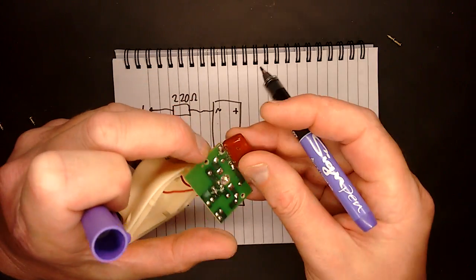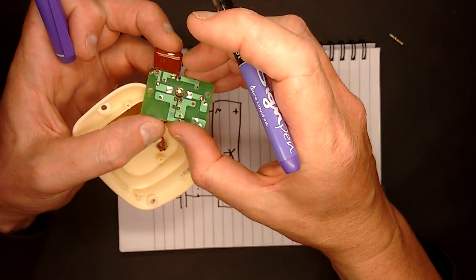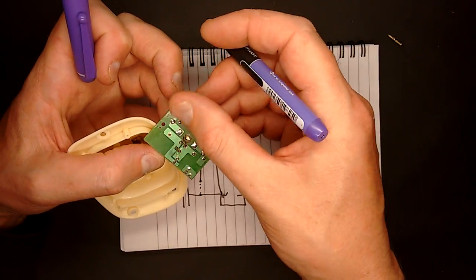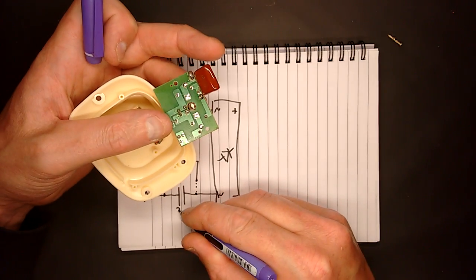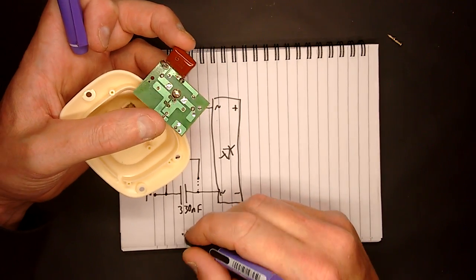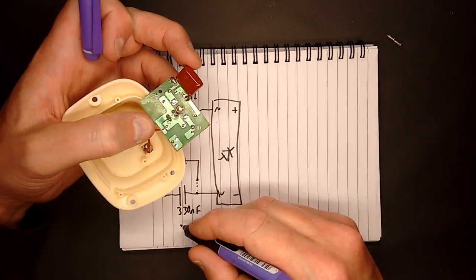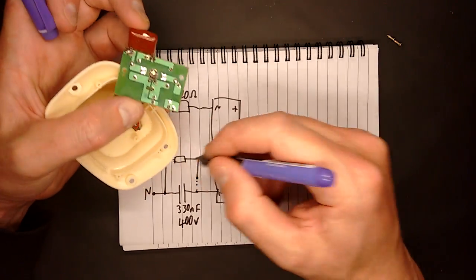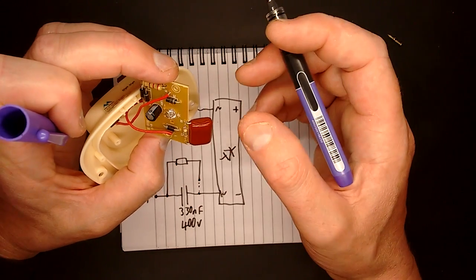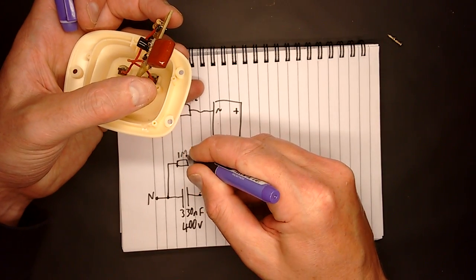So the capacitor is 330 nanofarad, 334. So that's three, three, and four zeros. So that's actually 330,000 picofarad because they tend to rate these things in picofarads. But that equates to 330 nanofarad, which is also 0.33 microfarad. If you just get lost with these figures, don't worry, it just all comes naturally. 400 volts. This resistor, the colour rendering from these fluorescent tubes is terrible. Brown, black, green is 1, 0, and 5 zeros is 1 million ohms, which is 1 megaohm.